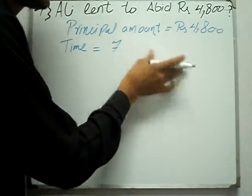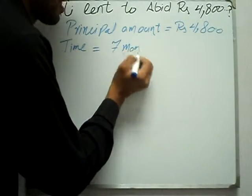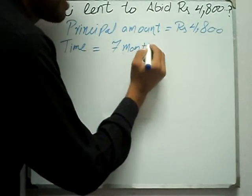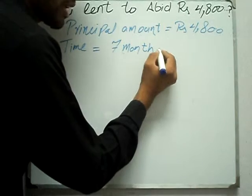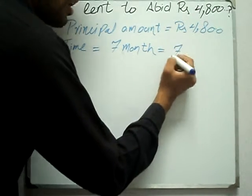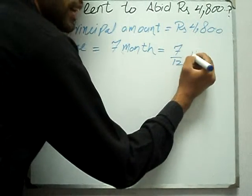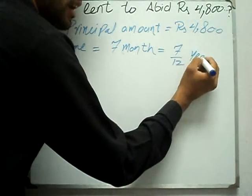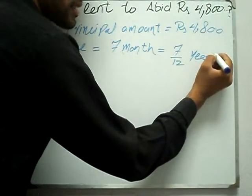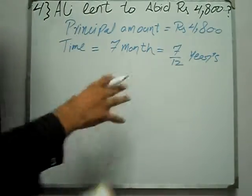Lekin humara time years mein use karte hain, to 7 months ko 7 over 12 se convert karenge. Time kya aare? 7 over 12 years.